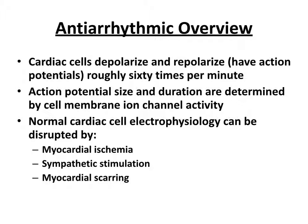Briefly, an overview of how things work normally. Cardiac cells are going to depolarize and repolarize about 60 times per minute — mine's probably going about 100 times per minute right now. Action potential size and duration get determined by cell membrane ion channel activity. You've got these basically electrical cells in the heart. They work a lot like neurons, and these cells have action potentials a lot like a neuron, albeit with a little bit of difference.